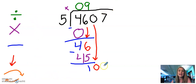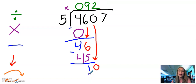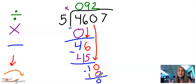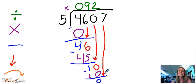This time, looking at 10 and five. My fact family tells me that five times two is going to give me 10. So I'm going to do that and then subtract. 10 minus 10 equals zero. But I'm not done because I still have to bring down my seven.